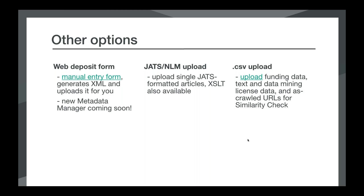If you want to expand your existing metadata records by adding license and funding information, or adding references to something that's already been registered with us, we have a number of paths for that. For license and funding information, and for as-crawled URLs that you would use with our similarity check service, you can upload that type of data using CSV files. And if you are on the OJS platform, note that OJS will generate and send in Crossref metadata for you, depending on what version you use.